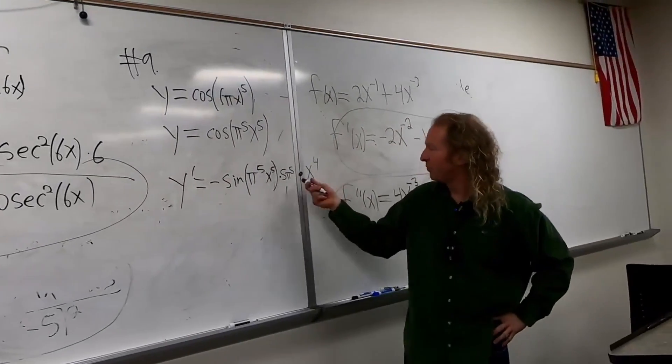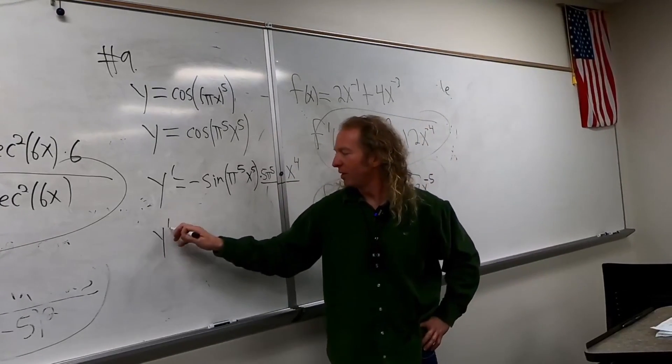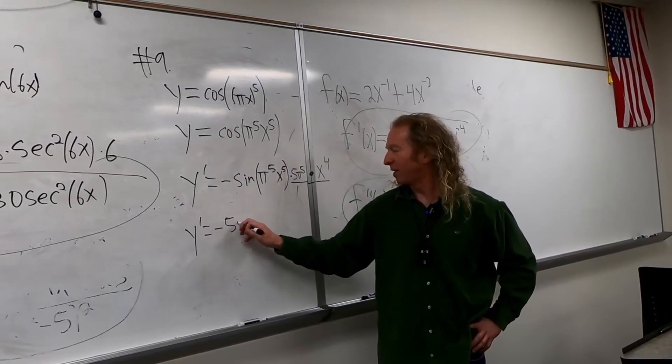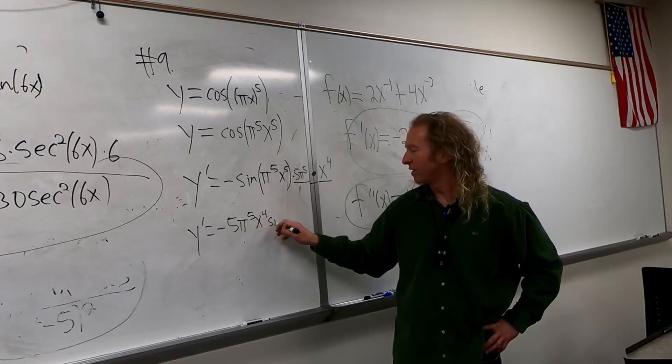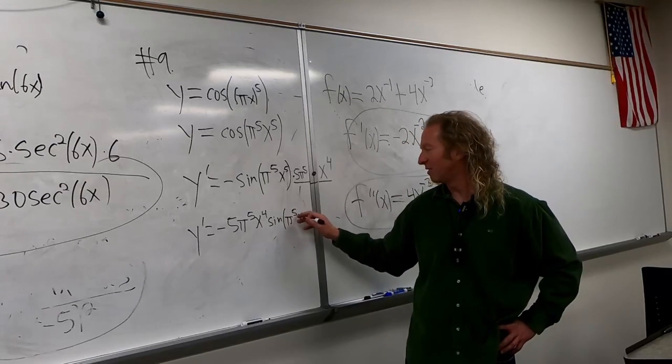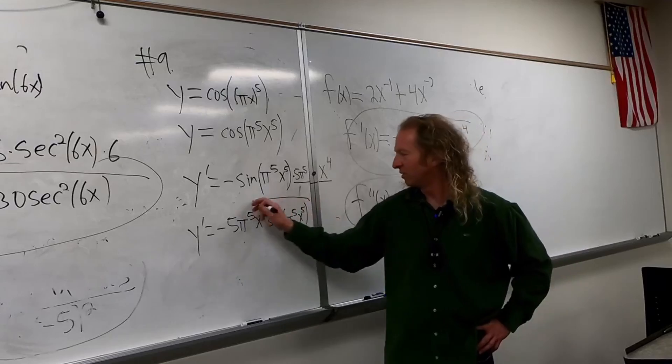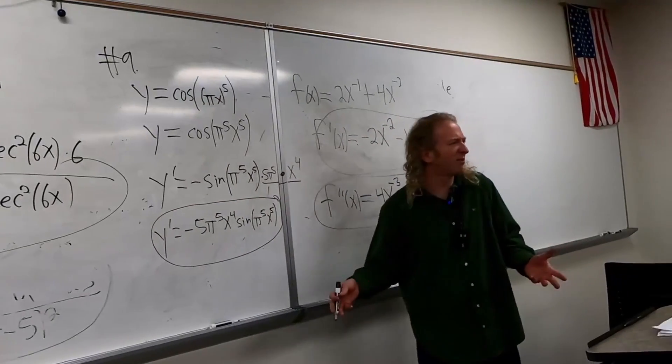I guess the last thing to do is maybe just put this in the front. So this will be y prime equals negative five pi to the fifth x to the fourth sine of pi to the fifth. It's really confusing, isn't it? The pi to the fifth is really terrible. It just looks really weird. We don't really usually see pi to the fifth anywhere.